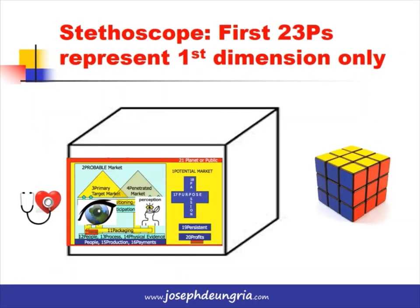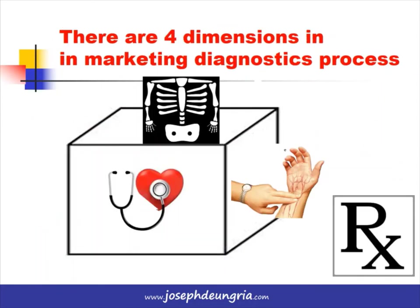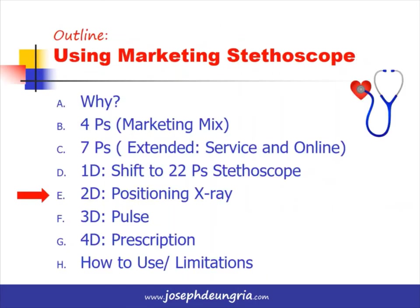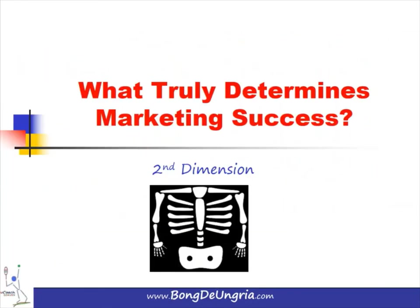The first 23 Ps in the marketing stethoscope represent only the first dimension of our diagnostic process. There are four dimensions: the in-depth X-ray, the pulse which is about time and internal considerations, and a prescription. We now go to the second dimension — the positioning X-ray.